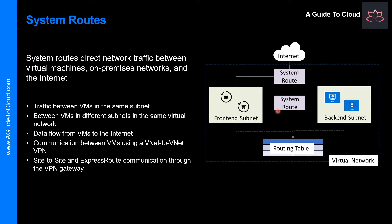Azure uses System Routes to direct network traffic between Virtual Machines, On-Premises Networks, and the Internet. The following situations are managed by these System Routes: traffic between VMs in the same subnet, between VMs in different subnets in the same virtual network, and data flow from VMs to the Internet.